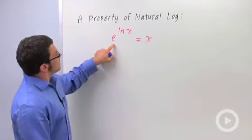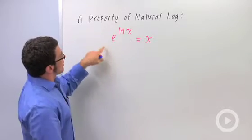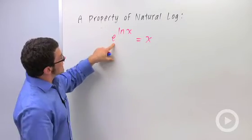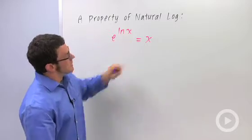But first, I want to take a look at an identity that comes from a property of natural logs. e to the natural log of x equals x.